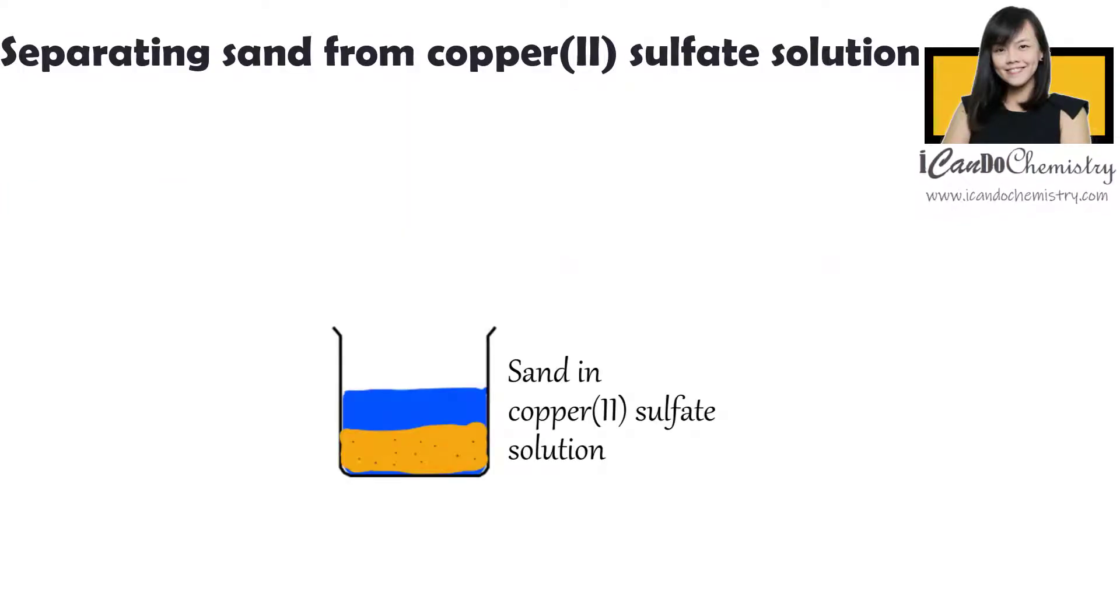Let's say we have a mixture of sand and copper-2-sulfate solution. There are three components in this mixture: we have sand, copper-2-sulfate salts, and water.